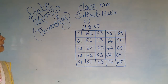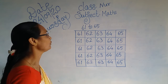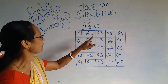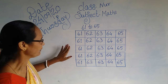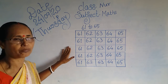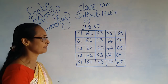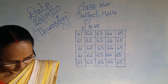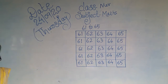Okay children, all right? 61 to 65. You will see all the copy of English and practice. You will see the next class. Bye.